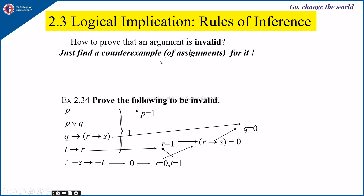To prove that it is invalid, consider that for the values of assignment of these variables the premises are true and the conclusion is false. We know that here we have to consider that negation of s implies negation of t is false, so this is 0. This implies the left-hand side — not of s is true, so s is false — and the right-hand side: not of t is 0 which implies t is 1.